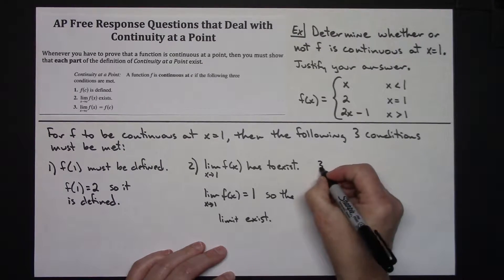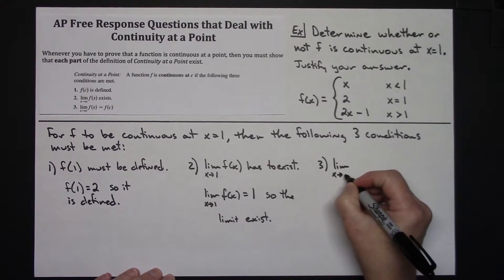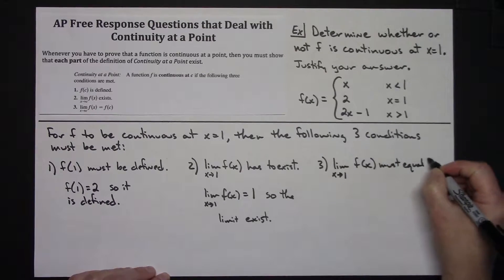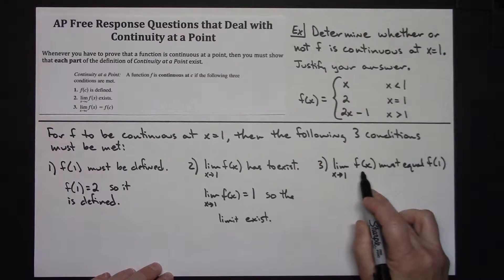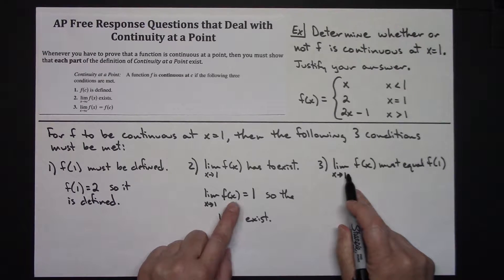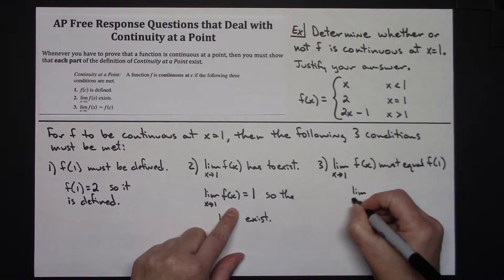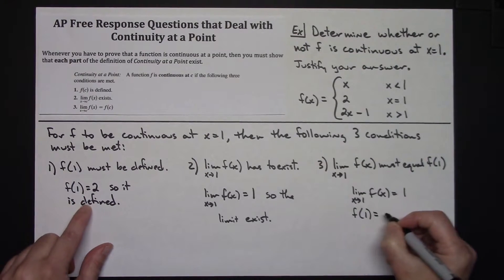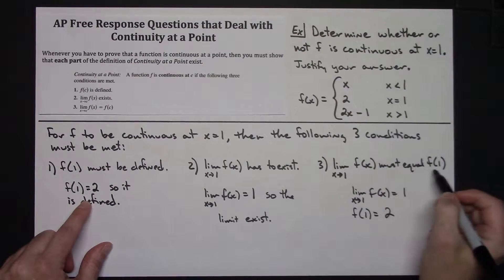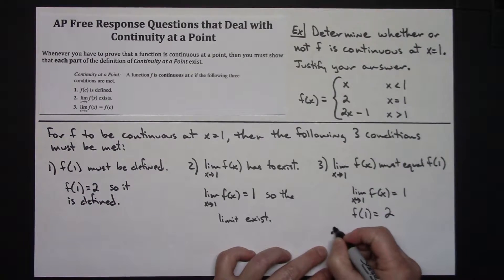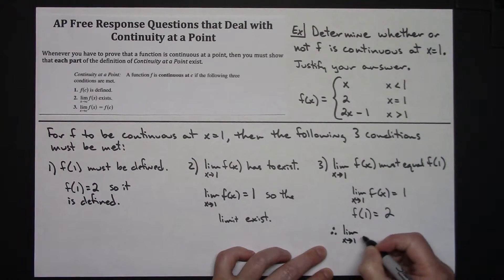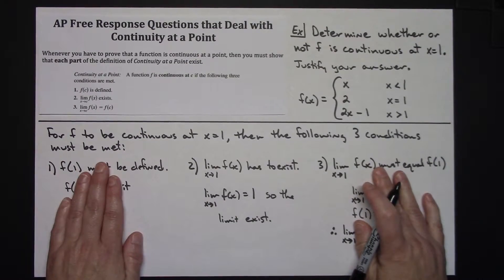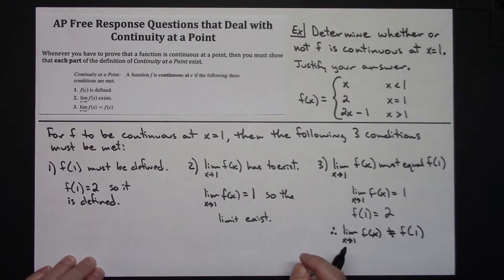Now let's check the third part of the definition: the limit as x approaches one of f of x must equal f of one. We've already calculated both of these. The limit as x approaches one of f of x equals one, and f of one equals two. Those two things must be equal, but obviously they are not equal. Therefore, the limit as x approaches one of f of x does not equal f of one — this condition fails. The third condition is not met, so this function is not continuous at one.